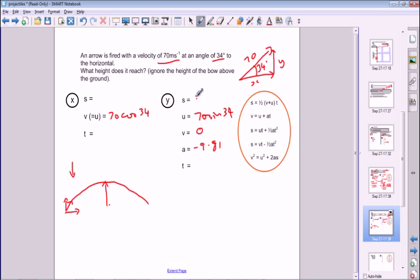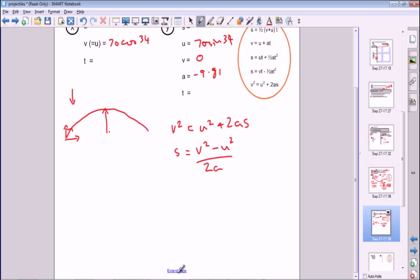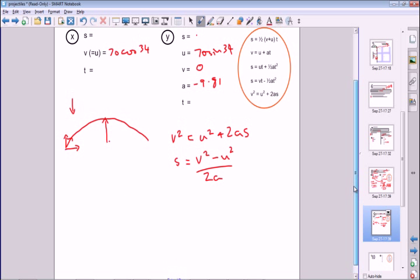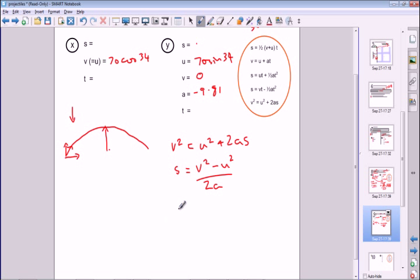The question is, what height does it reach? So we're looking for s. We have u, v, and a, so we're going to use this equation here, this one at the bottom. v squared is equal to u squared plus 2as. We can rearrange that for displacement. s is equal to v squared minus u squared divided by 2a, or g if you like.